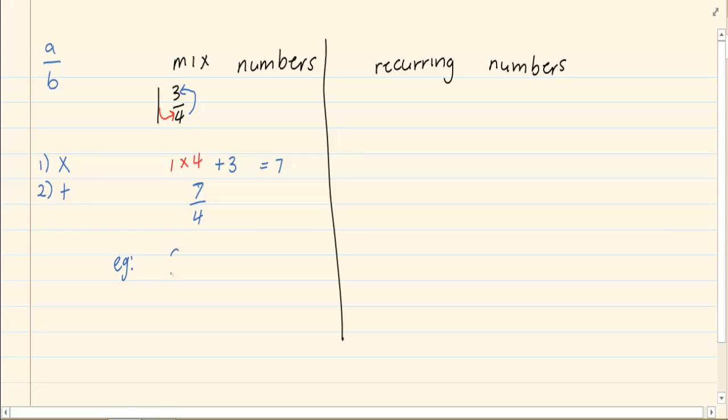Let's do the following example. If it is 2 and 3 over 4 we are going to say 2 times 4 which is 8. Then we are going to add the 3 which is 11. So our fraction is 11 over 4.